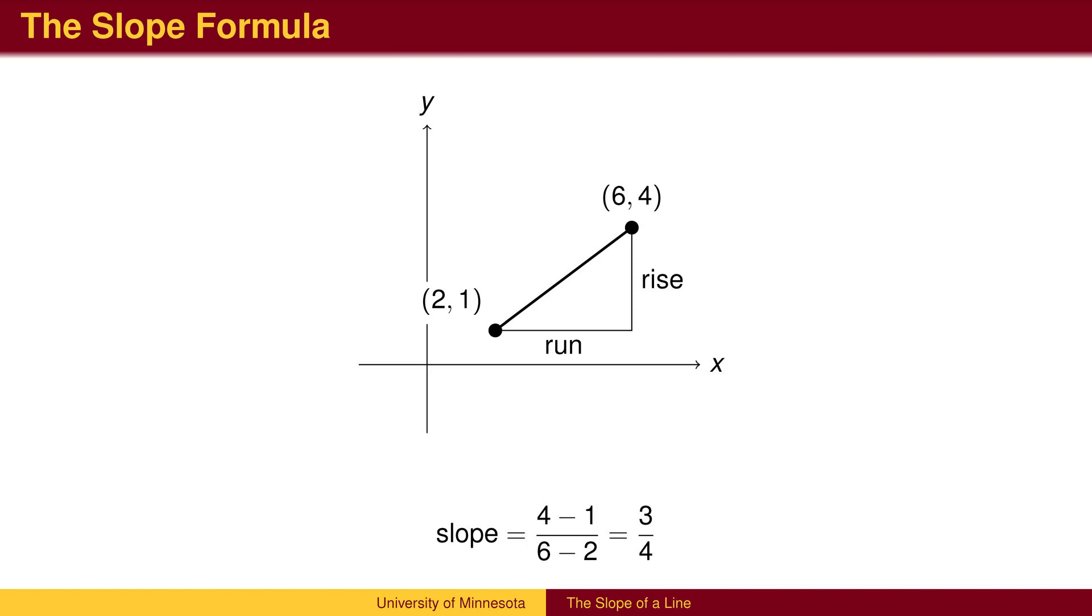Given two points, we can find the slope between the points by subtracting coordinates. The vertical change, the change in y, also known as the rise, is placed in the numerator. The horizontal change, the change in x, or run, is placed in the denominator.